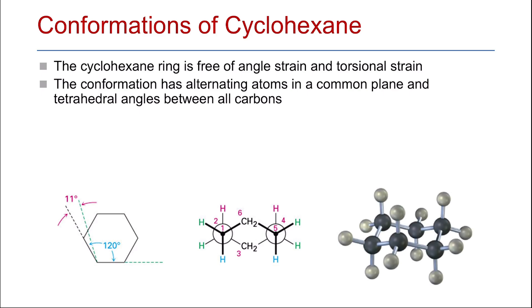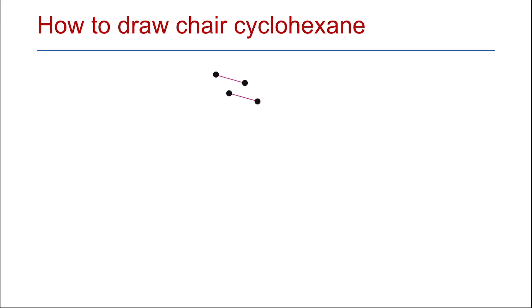In the chair conformation, there are alternating atoms in a common plane and a tetrahedral angle between all carbons. There are two planes for the chair conformation of cyclohexane — one is above the ring equator and the other is below the ring equator, with atoms alternating between these two planes. To draw the chair conformation, start by drawing two parallel lines slightly tilted, representing four of the six carbon atoms, then connect the first two atoms upward to form the fifth carbon and the other two downward to form the sixth carbon atom.